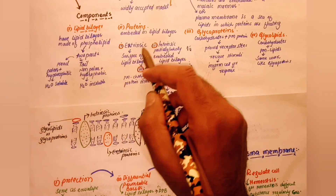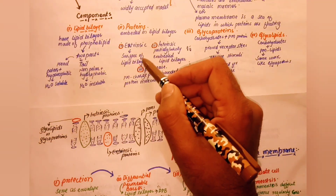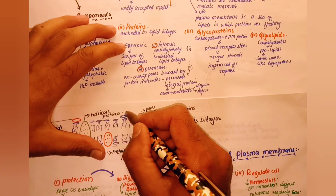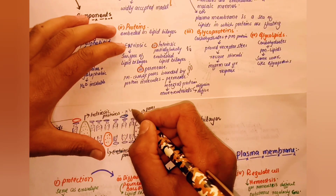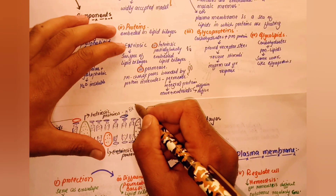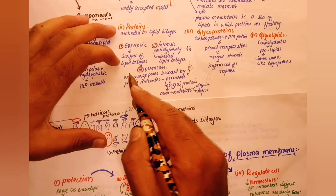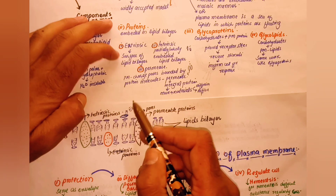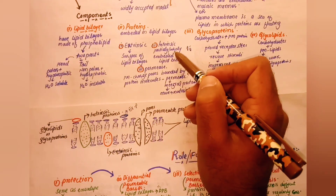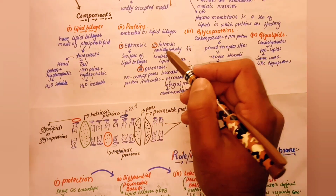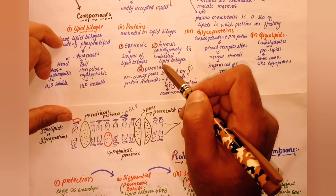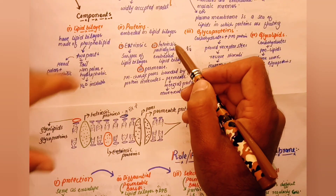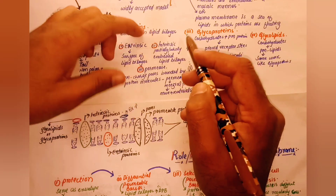The extrinsic protein is located on the surface of the lipid bilayer — it sits on the outer or inner surface and is not embedded deeply. The intrinsic protein is partially or totally embedded in the lipid bilayer.